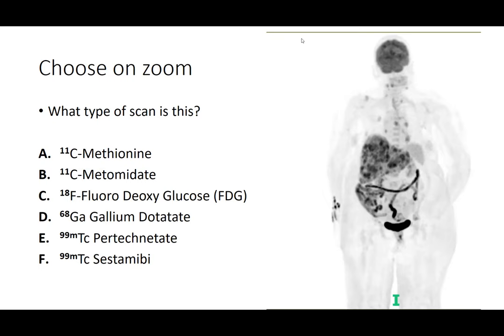This is an FDG fluorodeoxyglucose scan. The clue is that the brain is hot — the brain, of course, uses glucose. An FDG scan basically looks at glucose uptake. You can see all these metastases; if they are very metabolically active, you will see this kind of uptake. The clue that it's an FDG scan is that the brain is hot.